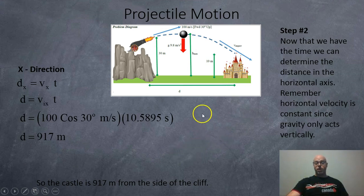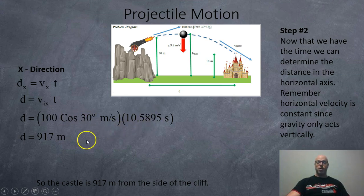Now that we've got the time, we can find the distance from the cliff to the castle. It's going to be the x velocity, which is 100 cos 30 degrees, times the time, 10.5895. And so we find that the cliff is 917 meters from the castle.